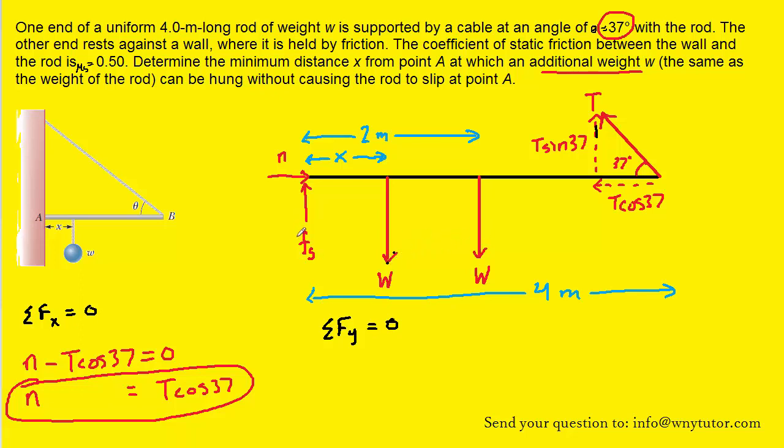These two forces, the w's, will be negative and the static frictional force will be positive as well because it's pointing up. Let's fill those into this equation. Let's also recall that the static frictional force is equal to a coefficient of static friction times a normal force. That's a standard equation for static friction. So let's replace fs with that expression.